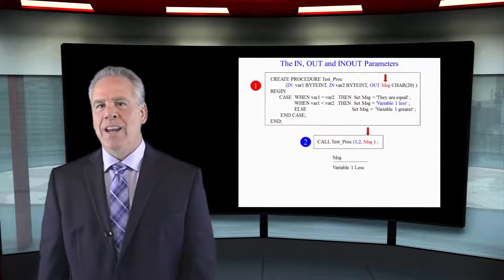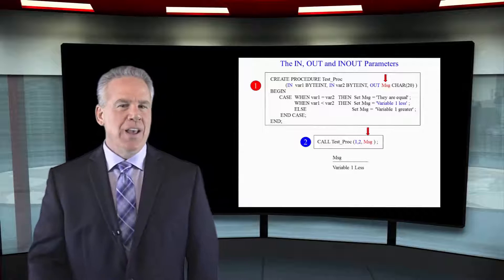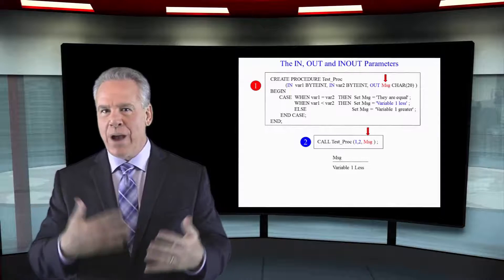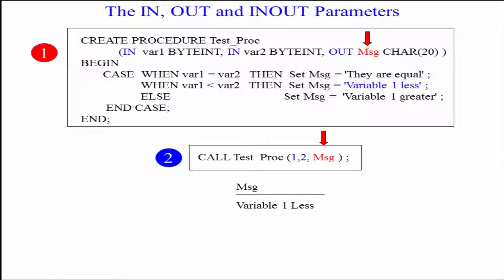We're going to create a stored procedure that has three parameters passed to it. Before we even go to the stored procedure, let's call it and show it how it's going to be called. Look down here in example two where I say call test proc one comma two comma MSG message.